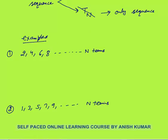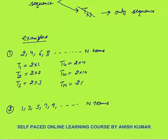Here I have written some sequences. We have to tell whether they are progressions or not. For the first sequence 2, 4, 6, 8: term number 1 is 2×1, term number 2 is 2×2, term number 3 is 2×3, term number 4 is 2×4. So term number 10 will be 2×10, and the nth term will be 2n. So we can find the nth term — this is a sequence as well as a progression.